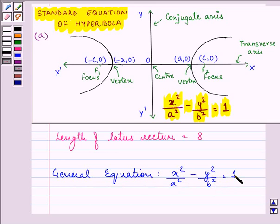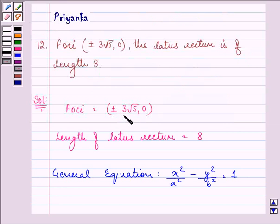And here the Foci is given as plus minus 3 root 5, 0 which is also equal to plus minus c, 0 and latus rectum equals 2b square by a.